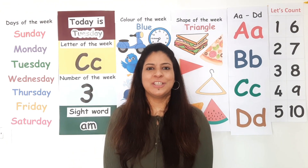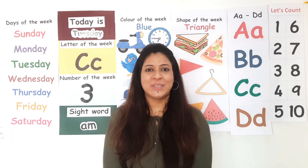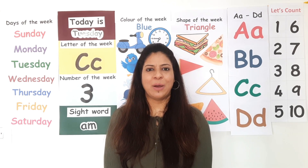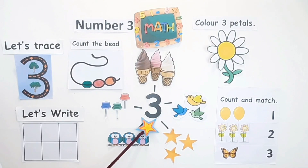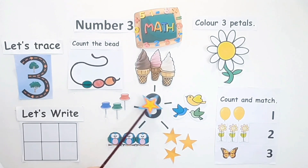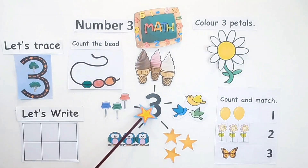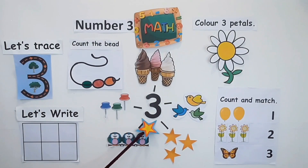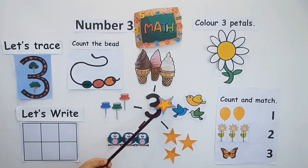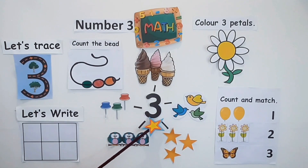Children, today is Tuesday and on Tuesdays we learn about a new number. Today we are going to learn all about number 3. The formation of number 3 is half around and half around — half around and half around makes the figure of 3. When we write number 3 we make a curved line and then one more curved line.